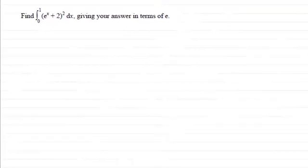Hi, now in this question we're asked to find the integral of e to the x plus 2 all squared, integrated with respect to x between the limits x equals 0 and x equals 1, and we've got to give our answer in terms of e.